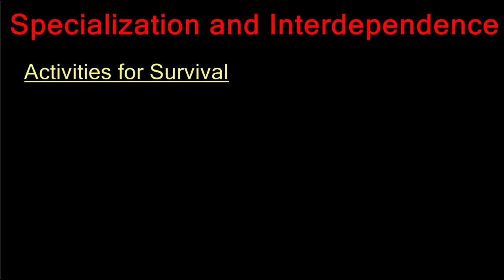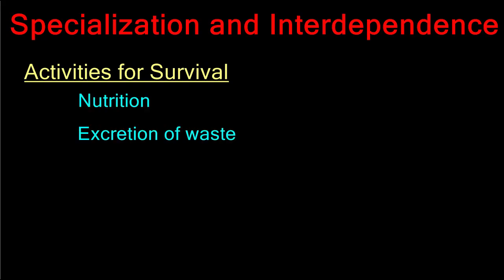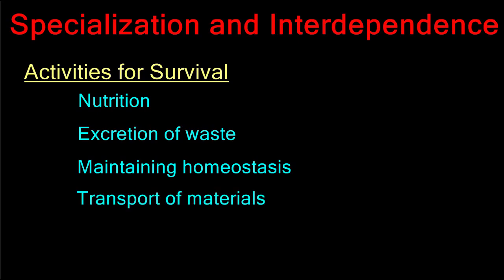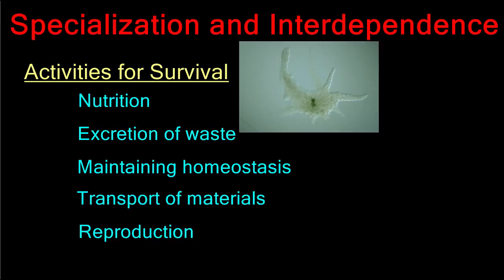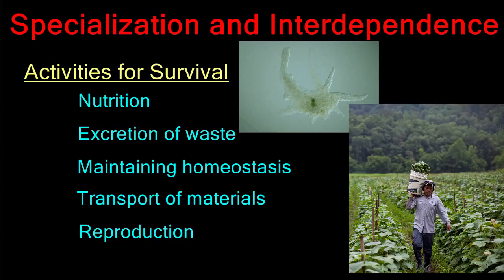All living things must perform certain activities in order to survive. Some of these activities might include finding nutrition in the environment, the excretion of waste products, maintaining an internal balance called homeostasis, transporting materials, and reproduction. All living things must perform these activities, and others as well, whether they are a unicellular amoeba or a multicellular human being.